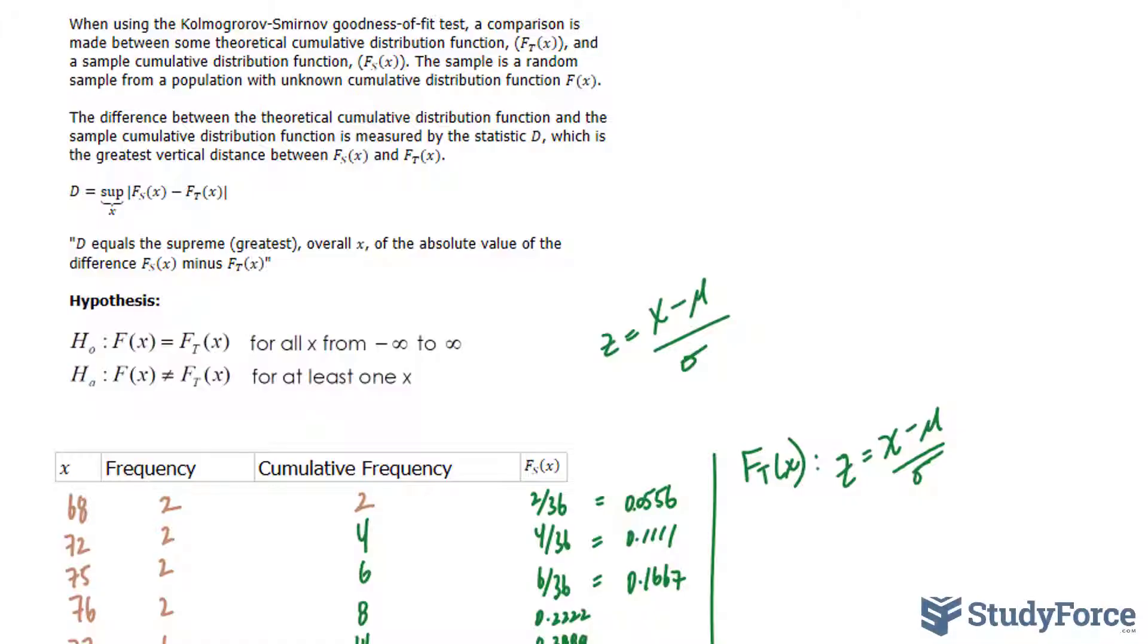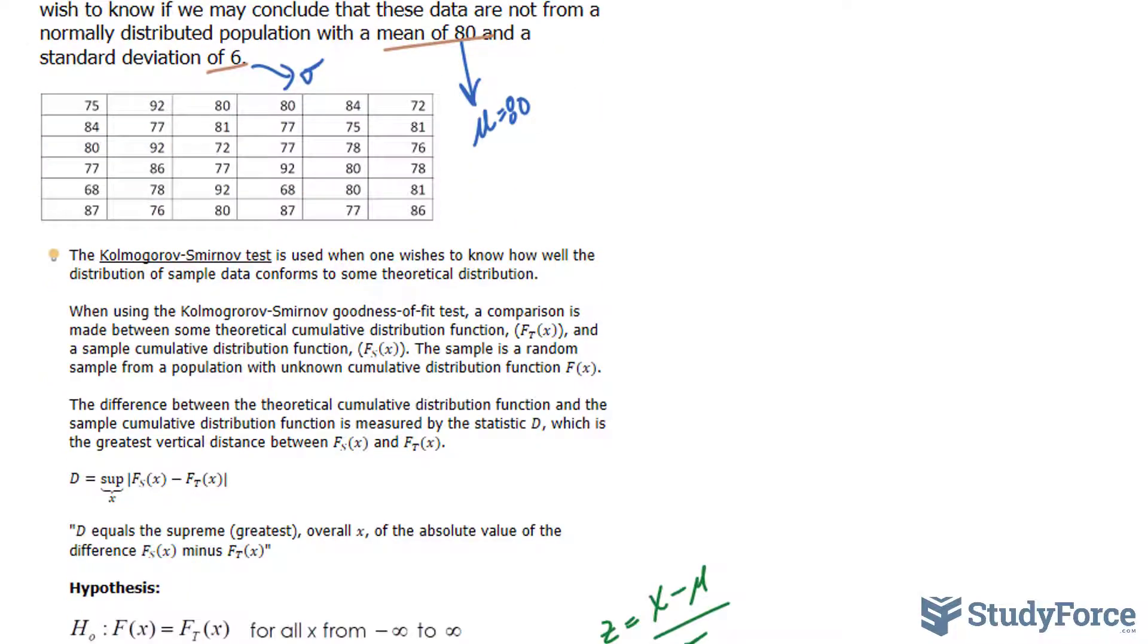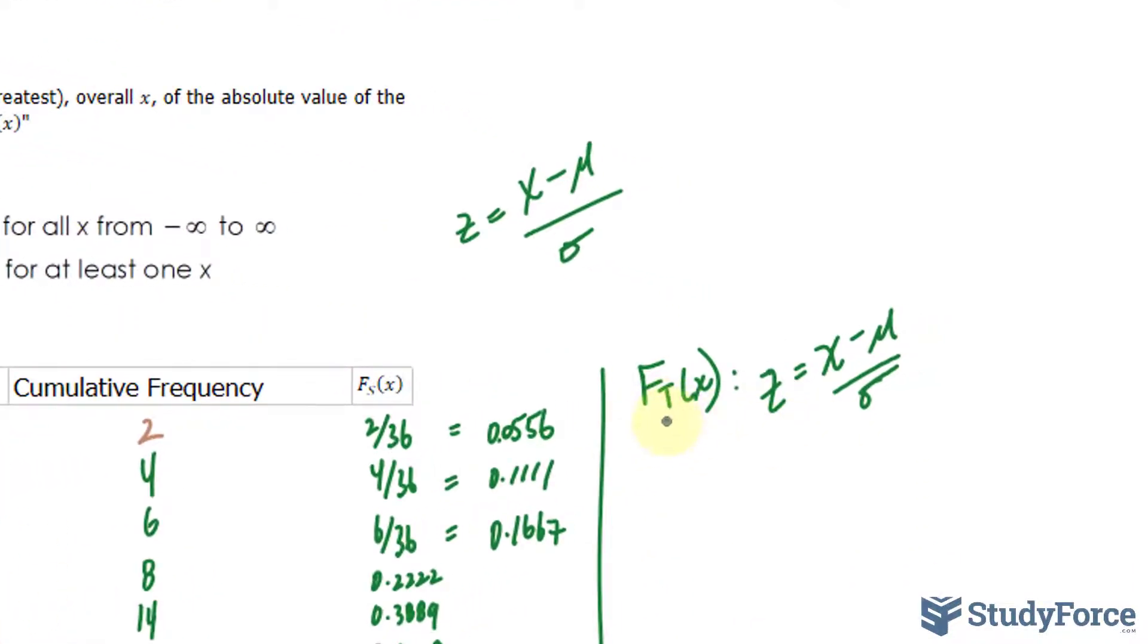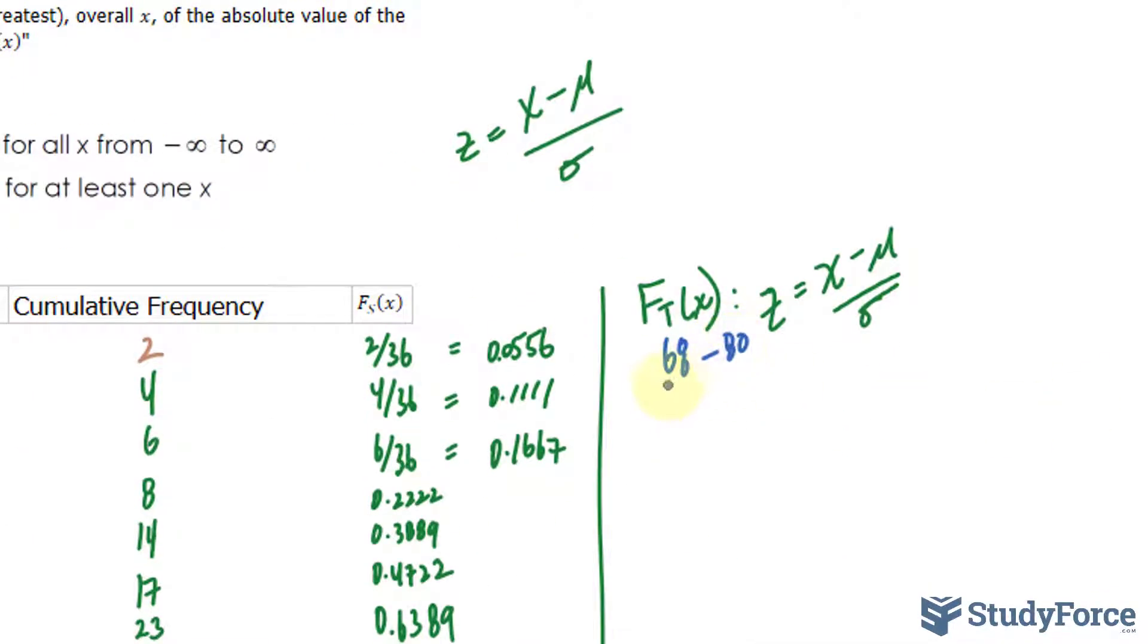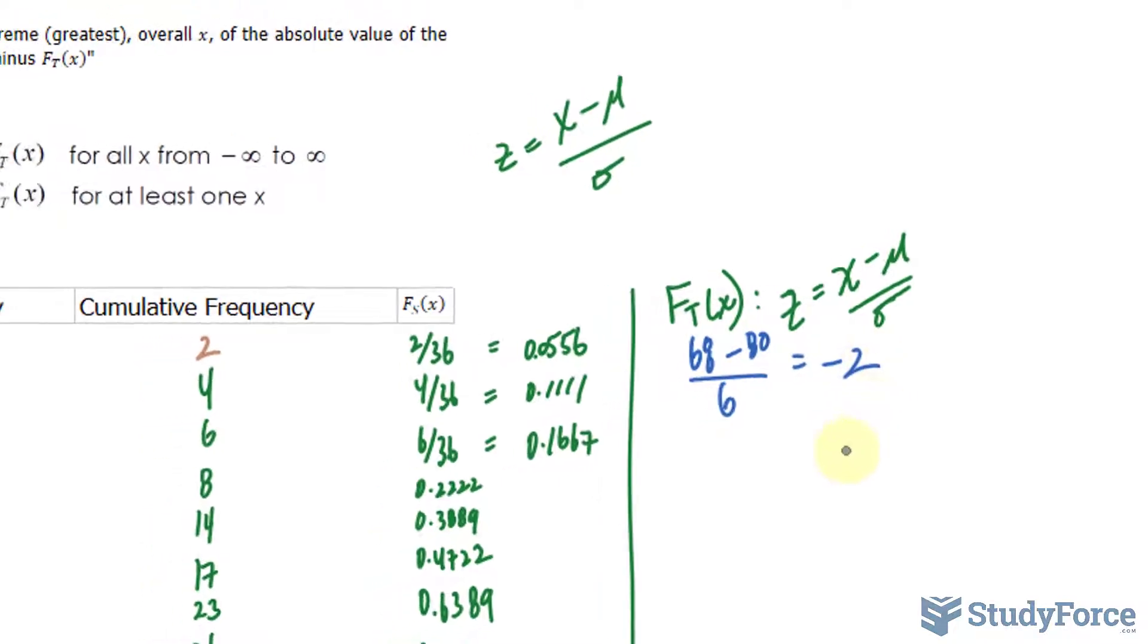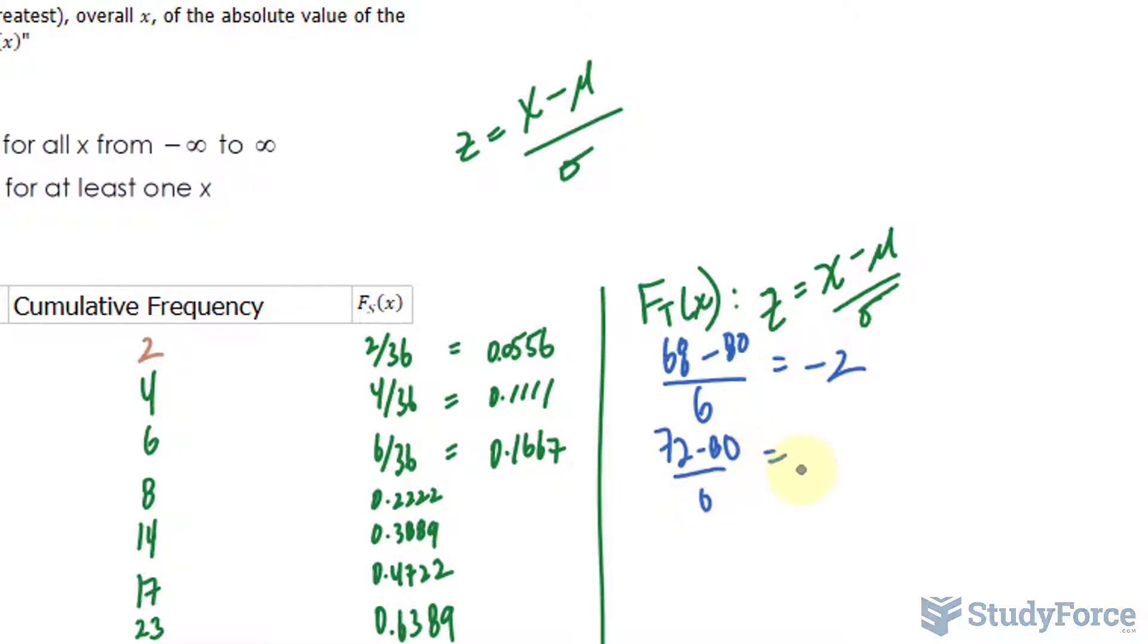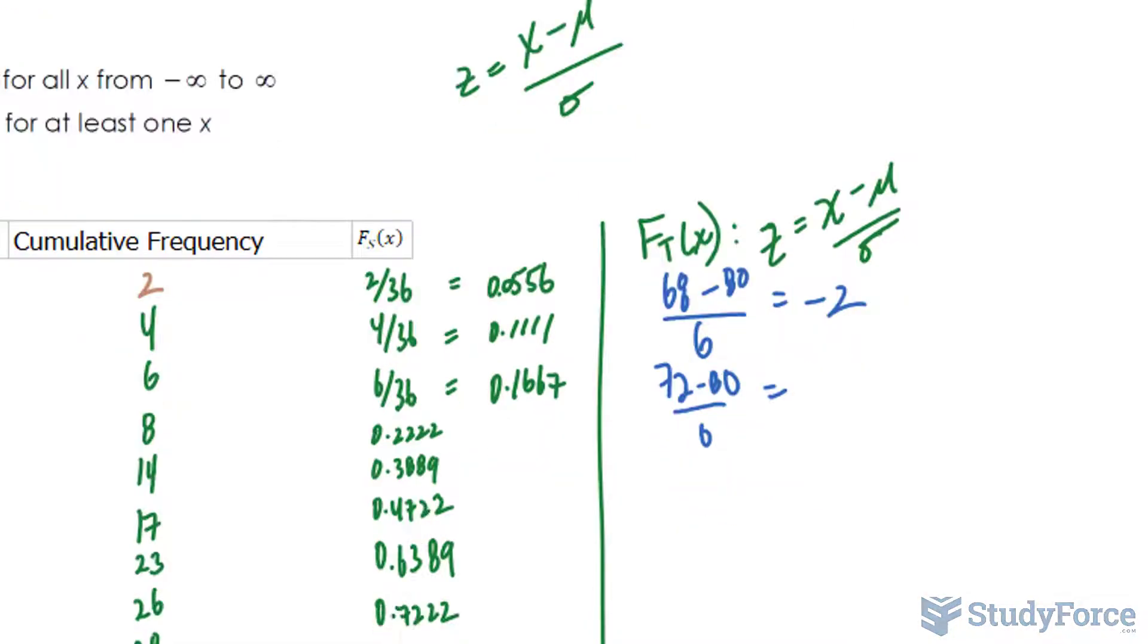Remember, we were given the mean, and I did tell you that we'll be using that value later on. So I'll take 68 minus the mean of 80 and divide it by the standard deviation of 6, and this will give me the z-score for 68. You need to do this for all of these x values. If you calculate this out, you should end up with negative 2. Now we move on to 72. 72 minus 80 over 6, and you get the idea. These are the correct values that you should find.